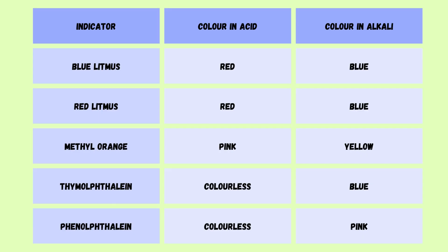Here are the indicators which change color in acid and alkaline. Blue litmus turns red in acid and remains blue in alkaline. Red litmus turns red in acid and blue in alkaline. Methyl orange turns pink in acid and yellow in alkaline. Thymolphthalein is colorless in acid and blue in alkaline. Phenolphthalein is colorless in acid and pink in alkaline.